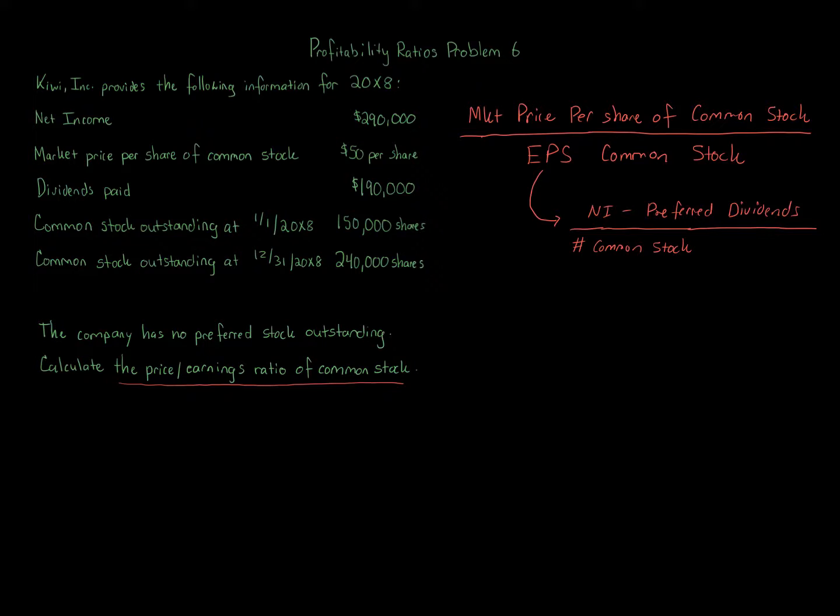So if you have beginning and ending balance, you average the two numbers. Number of common stock shares outstanding, and that is a weighted number. If you're just given one amount, just use that, but if you're given a beginning and ending balance, you want to use that.